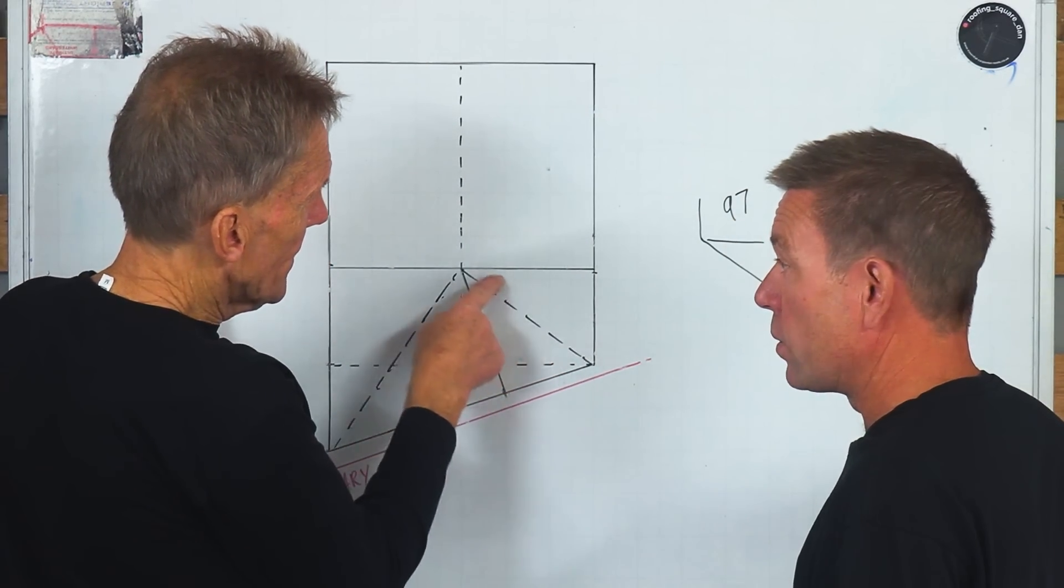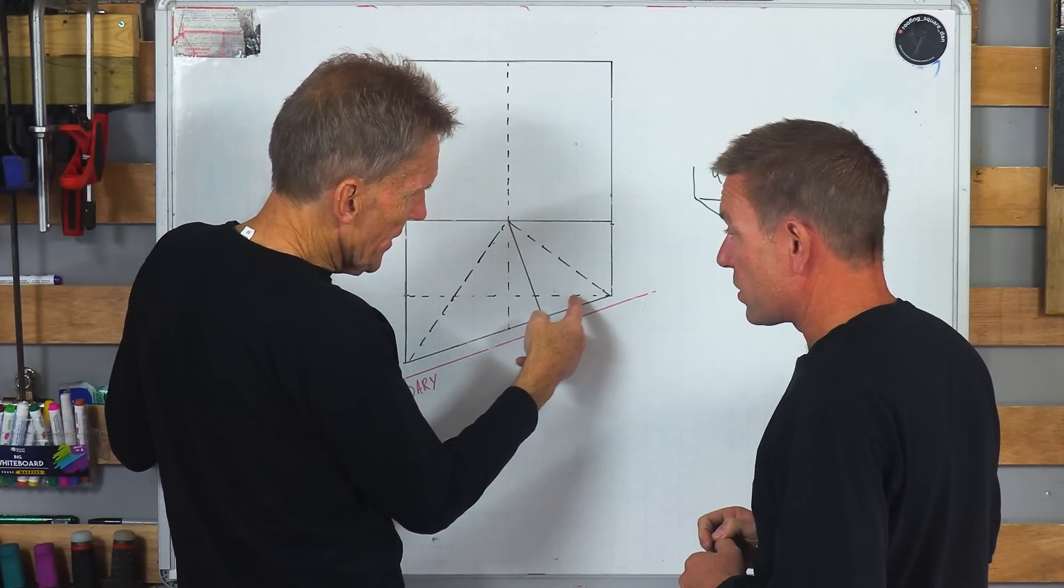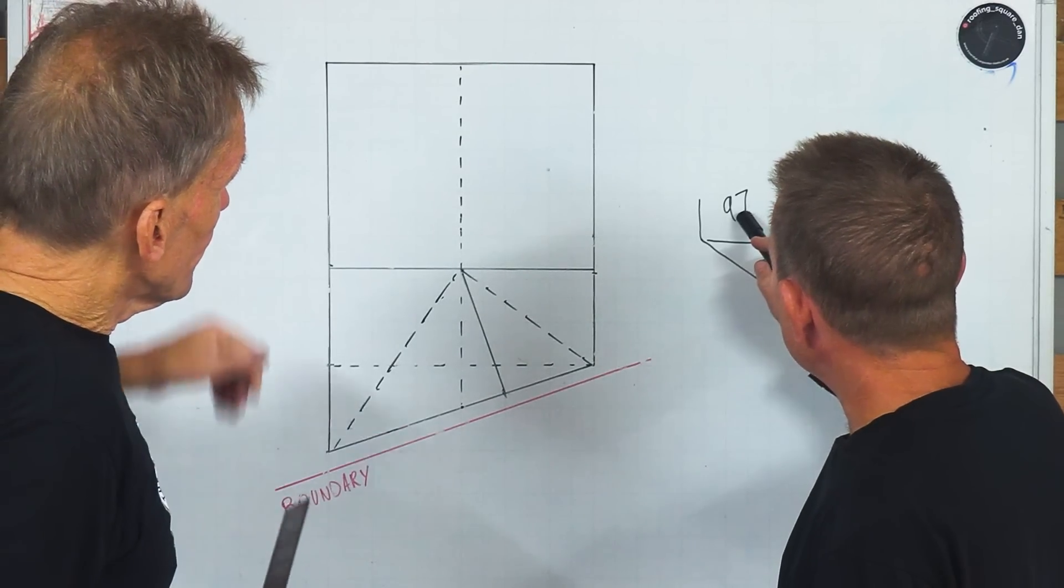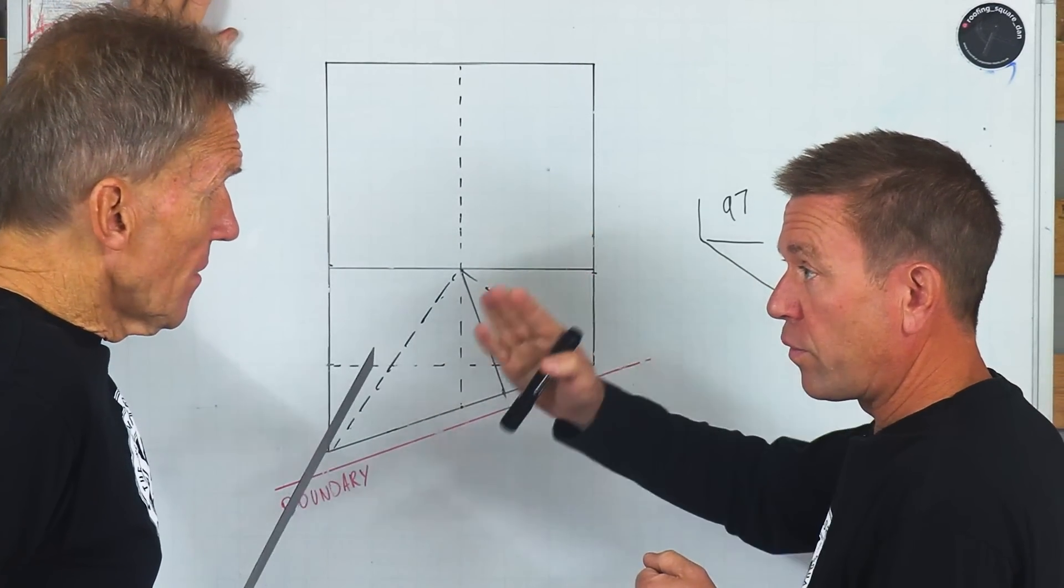So that's not a 45 then? No, it's out of square. So the angle, what do we need? This angle here? Yes. And then we halve that? Halve that. Because it was 97 degrees, half of that was 43 and a half. I put 43 and a half on the chop saw.